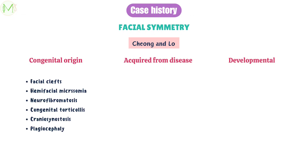Congenital or prenatal causes include facial clefts, hemifacial microsomia, neurofibromatosis, anatomical changes at the base of the skull, congenital muscular torticollis, unilateral coronal craniosynostosis and positional plagiocephaly.